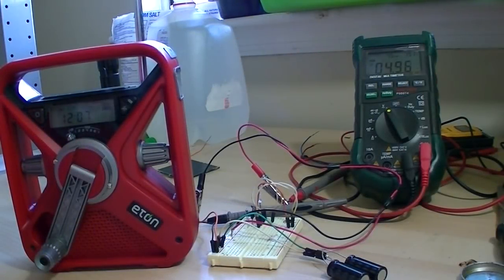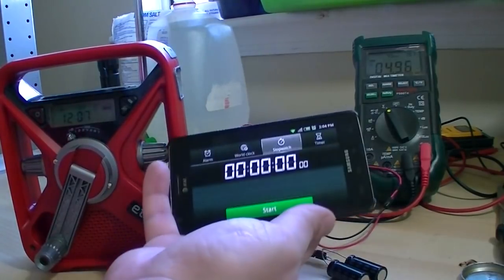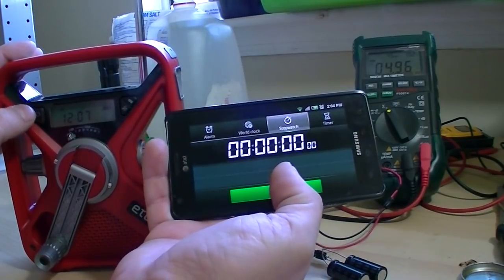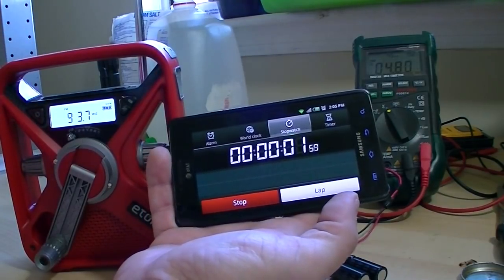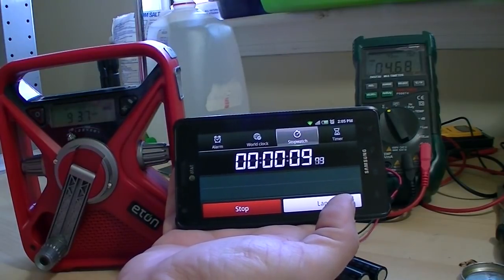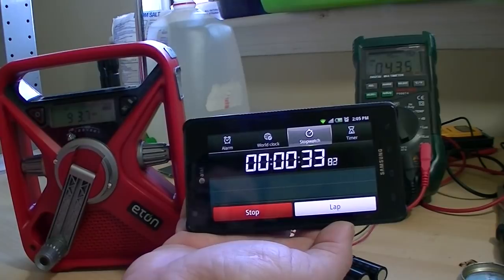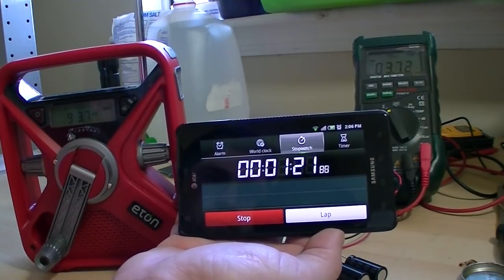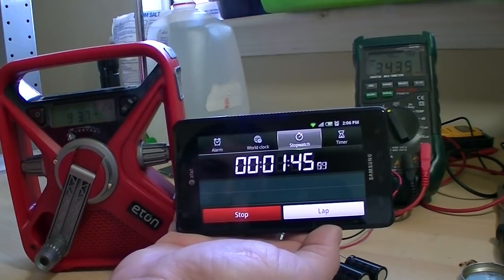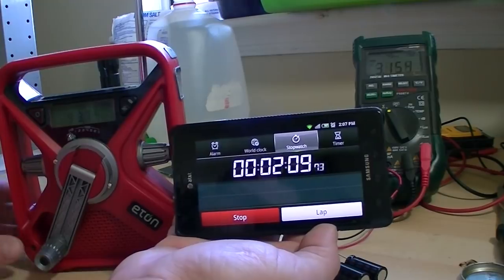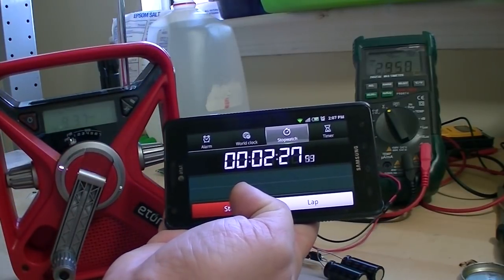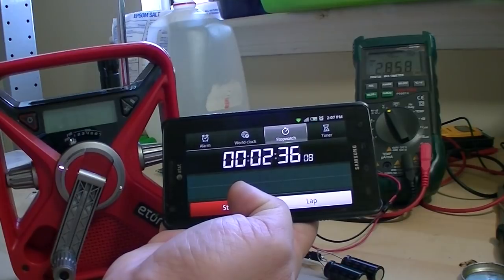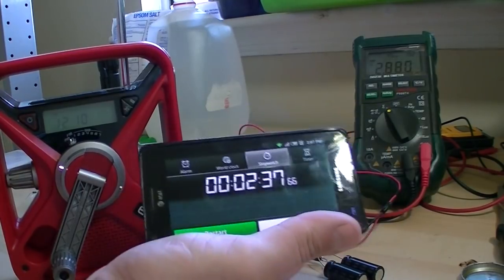Now we're going to see how long it takes for the discharge. I've got my little phone here set up. I'm going to turn on the radio and see how long it takes to discharge down to 2.9 volts, where it will automatically shut itself off. Here we go. And there you go. About 2 and a half minutes, roughly.